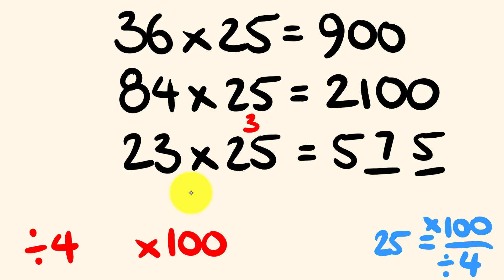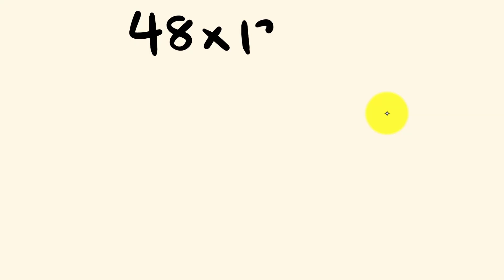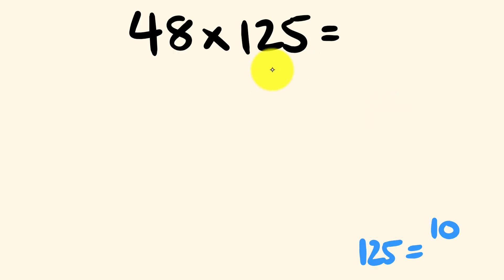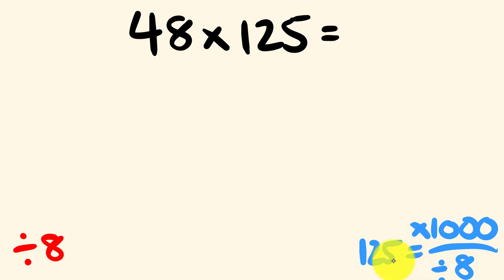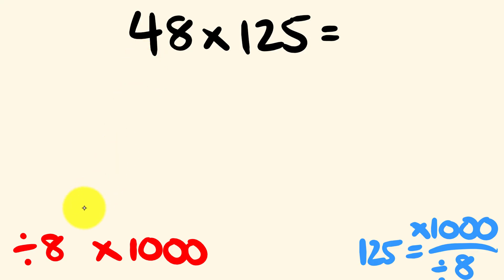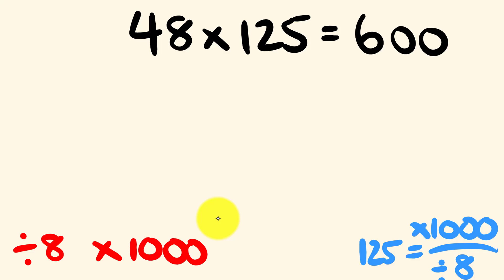Now we're going to look at multiplying by 125. So let's go 48 times 125. 125 is equal to 1000 divided by 8. So we divide by 8 and multiply by 1000, putting those three spaces in and taking care of any remainders. 48 divided by 8 is 6, and then multiply by 1000 — the answer is 6000.